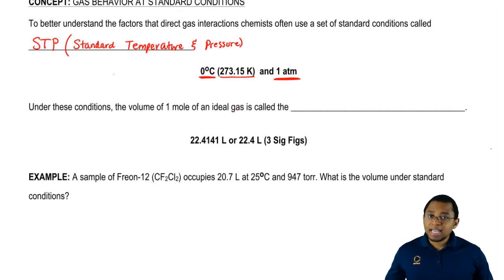Now we're going to say under standard state conditions, the volume of one mole of any gas—an ideal gas just means a gas that behaves as though it's by itself—one mole of any gas under STP will have the same volume.